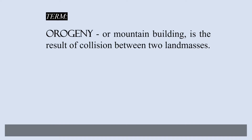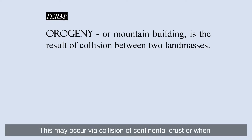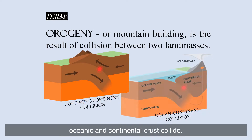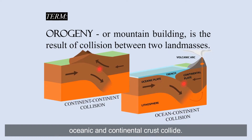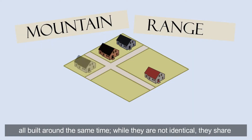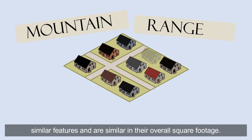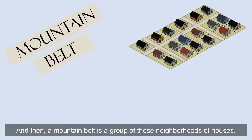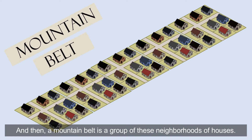Orogeny, or mountain building, is the result of collisions between two land masses. This may occur via collisions of the continental crust, or when oceanic and continental crust collide. Think of mountain ranges like a neighborhood of houses all built around the same time — while they are not identical, they share similar features and are similar in their overall square footage. And then a mountain belt is a group of these neighborhoods of houses.